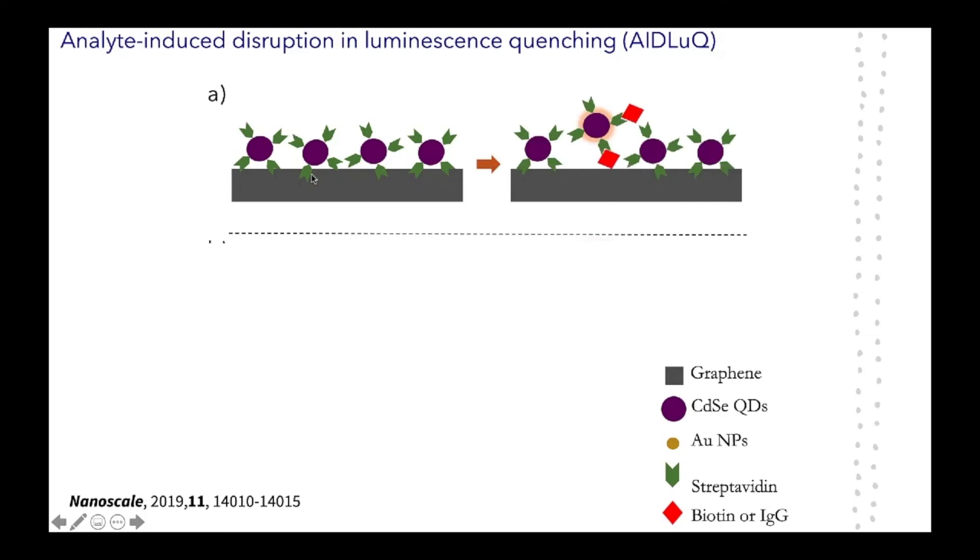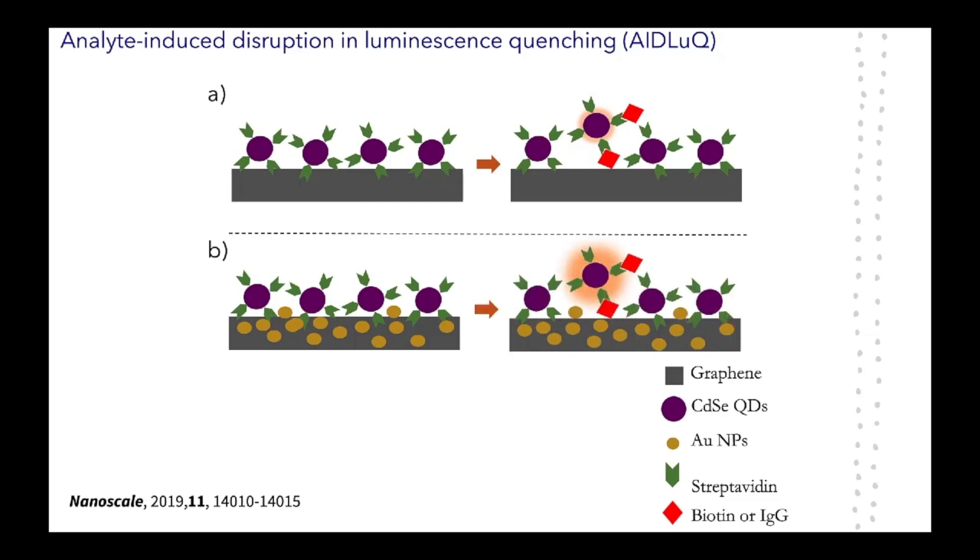When IgG antibodies in the blood sample are added to the platform, the IgG antibodies bind the quantum dots, lifting them up above the surface. As the quantum dot is lifted above the surface, it begins to fluoresce because it is no longer in contact with graphene. This fluorescence can be further enhanced by using gold nanoparticles. The addition of gold nanoparticles enhances the fluorescence due to surface plasmon resonance.